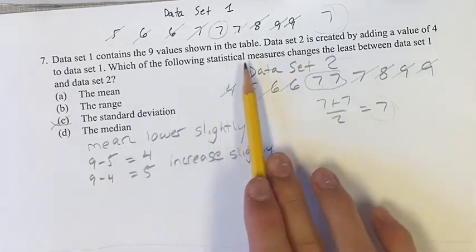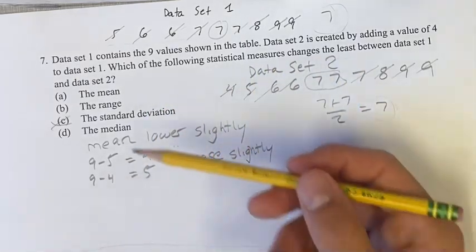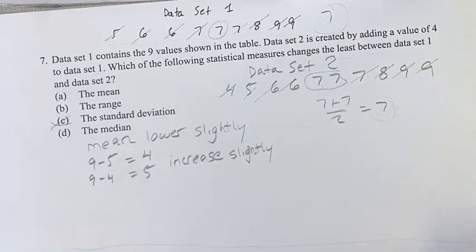Which of the following statistical measures changes the least? We've already seen that the mean, the range, and the standard deviation are all changing. So if the median is not changing, that means it's changing the least. The median is our answer, D.